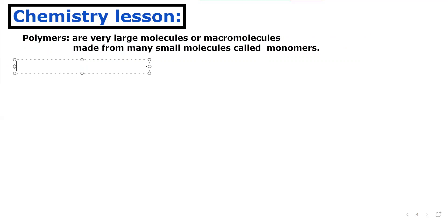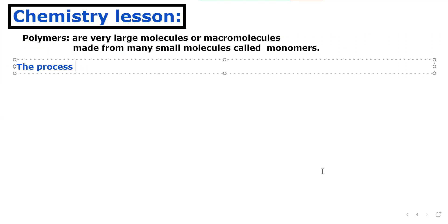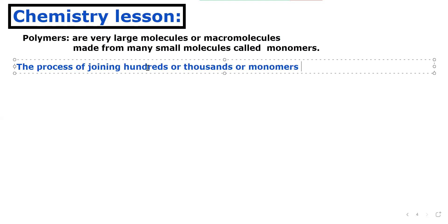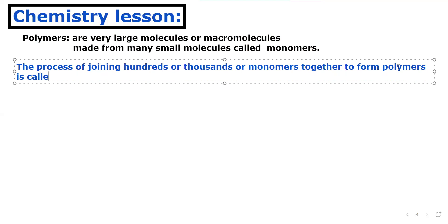We will be writing everything so we understand it clearly. The process of joining hundreds or thousands of monomers — where mono means one, so they are small units — together to form polymers is called polymerization.